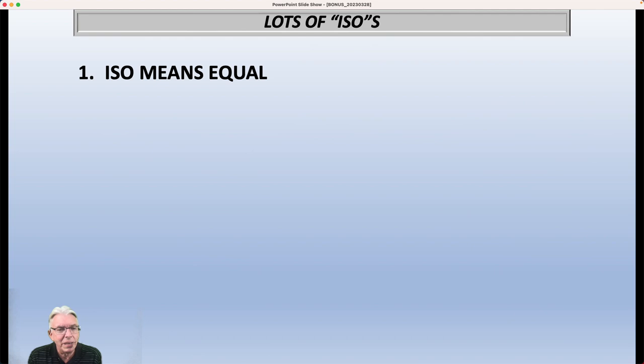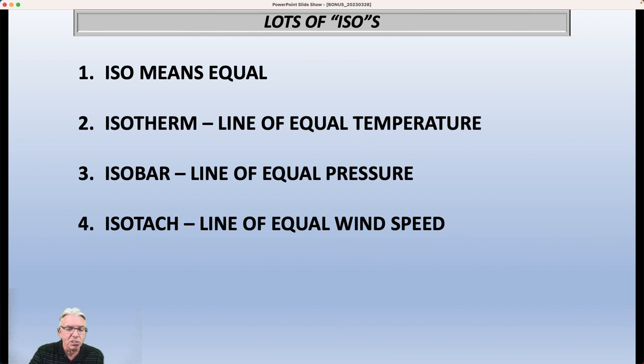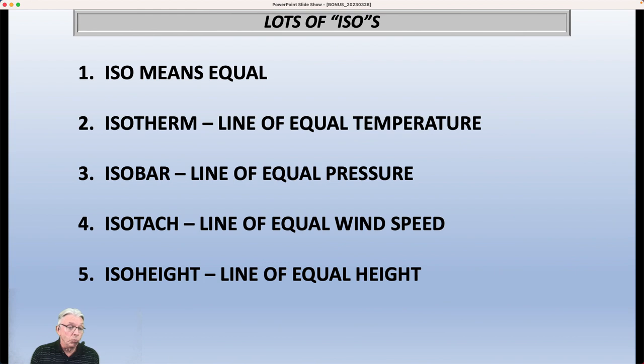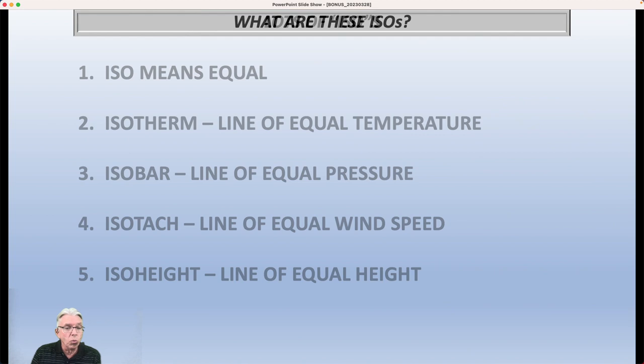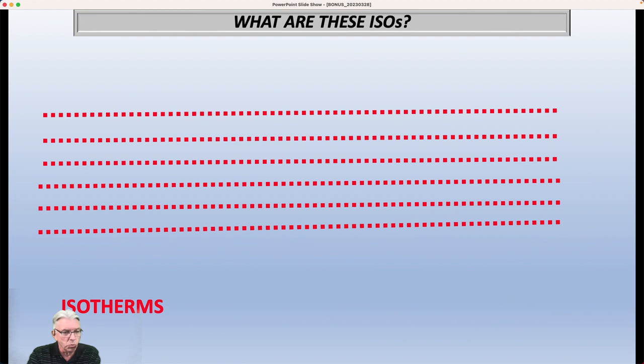Now let's talk about the term iso. Lots of isos. The word iso means equal. So an isotherm is a line of equal temperature. An isobar is a line of equal pressure. An isotac is a line of equal wind speed. An isoheight is a line of equal height. And we've talked about heights in the upper atmosphere. There's sort of the upper atmospheric equivalent of isobars here at the surface. So all of those isos refer to different variables, and they're simply lines where the value of whatever variable you're looking at is the same all the way along that line. In fact, when you draw them in, you're sort of playing a game of connect the dots.